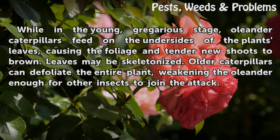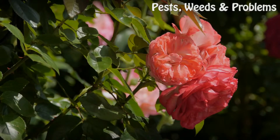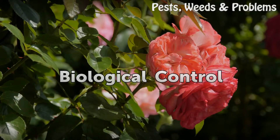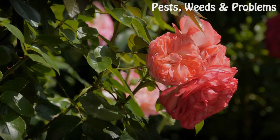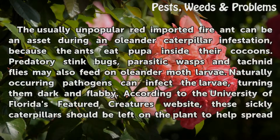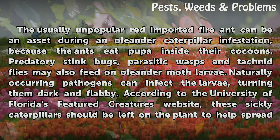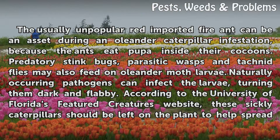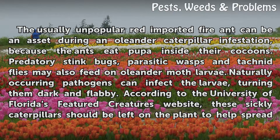Defoliation weakens the Oleander enough for other insects to join the attack. Biological Control: The usually unpopular red imported fire ant can be an asset during an Oleander caterpillar infestation, because the ants eat pupae inside their cocoons. Predatory stink bugs, parasitic wasps, and tachinid flies may also feed on Oleander moth larvae. Naturally occurring pathogens can infect the larvae, turning them dark and flabby.